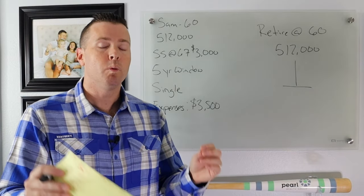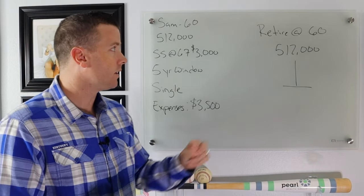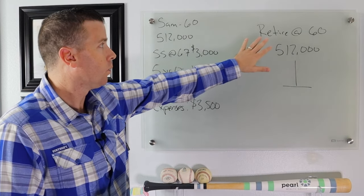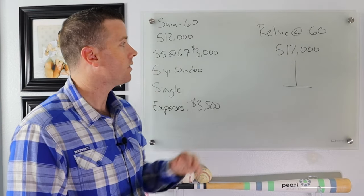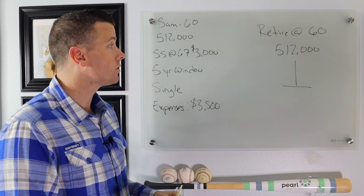And I retire at 60 with $500,000 saved for retirement. So we're looking right here. We're going to retire at 60 with $512,000 saved for retirement.